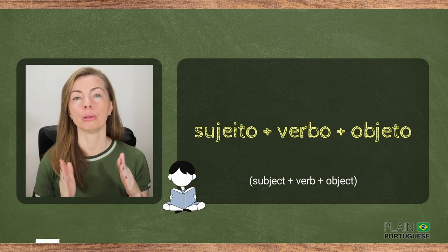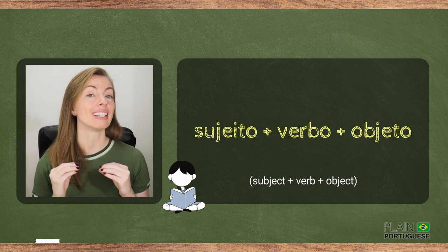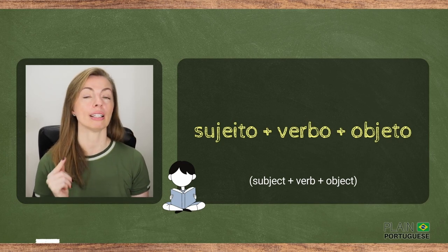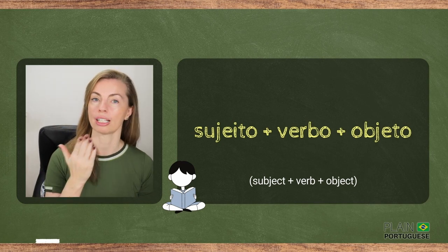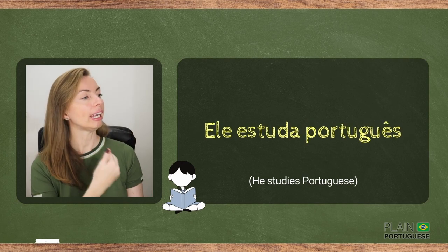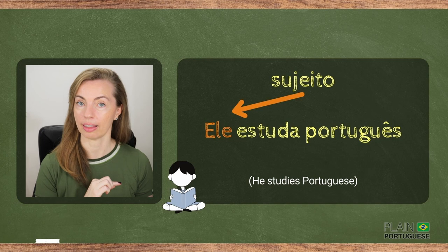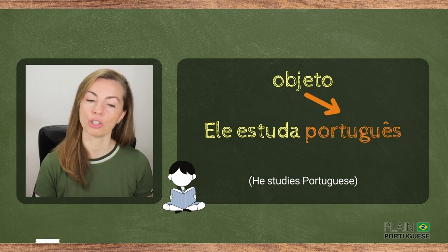As I said in the introduction, the structure of a sentence in Portuguese is quite similar to the one in English, having the subject plus verb plus object or phrase complement ordered. The default sentence order in Portuguese — I said by default — is subject plus verb plus object. For example: Ele estuda português. Ele is the subject, estuda is the verb, and português is the object.